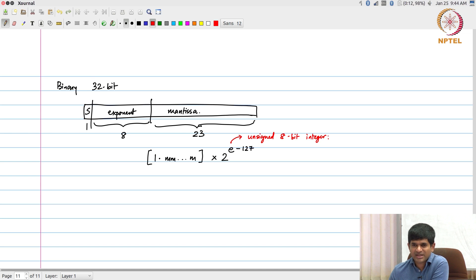What is an unsigned 8-bit integer? It just means it has values in the range 0 up to 255, 0 up to 2 to the power 8 minus 1. So E is a number in the range 0 to 255, I take that, subtract 127.